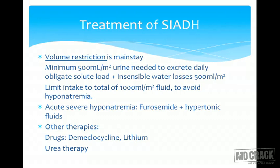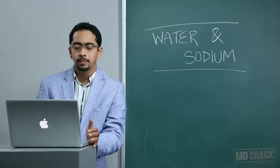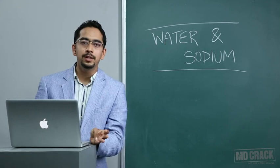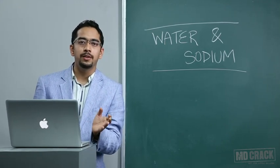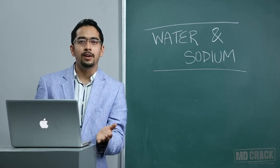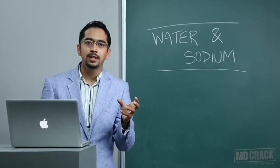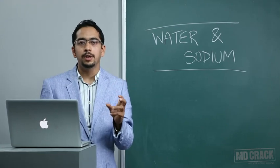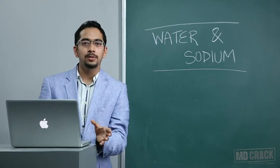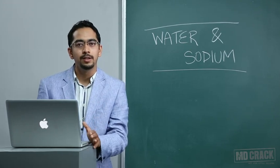Acute severe hyponatremia or symptomatic hyponatremia is when we have associated coma or seizures. Here we can give furosemide as a rescue measure, but remember furosemide causes natriuresis and free water loss, so we have to replace sodium. We give furosemide along with hypertonic saline. Other therapies such as demeclocycline and lithium are sometimes used in SIADH. Remember demeclocycline and lithium cause nephrogenic diabetes insipidus, so we're correcting excessive ADH by causing nephrogenic diabetes insipidus.